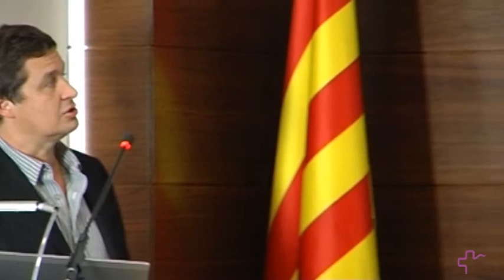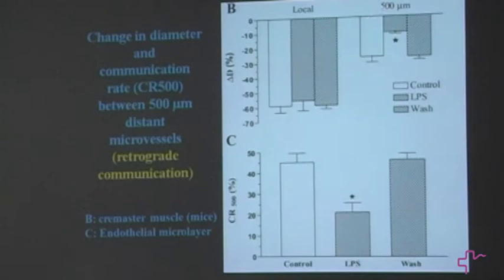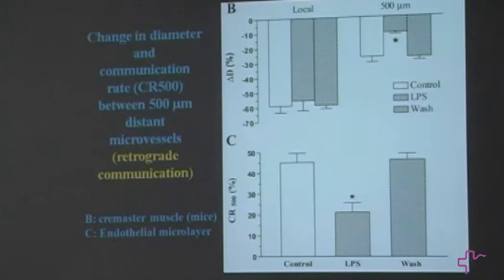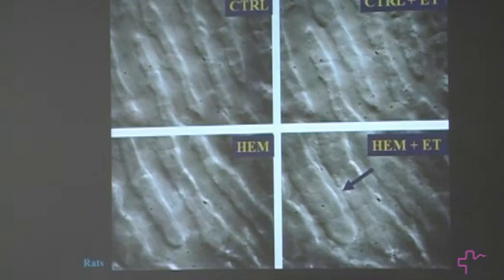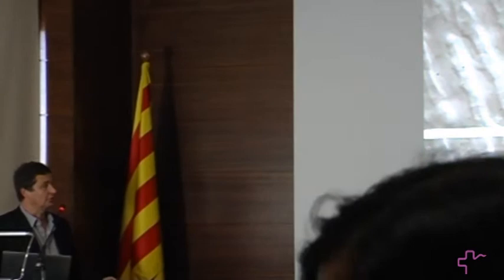The local response to a stimulus is preserved in the endothelium in septic conditions, but distant communication is lost. At half a millimeter distance, stimulation is not transmitted — so an area like my thumb that certainly needs more oxygen is no longer able in sepsis to communicate centrally to say 'I need more blood here.' Additionally, the endothelium becomes more sensitive to vasoconstrictive substances, leading to more severe vasoconstriction than in control conditions, as seen in these liver sinusoids.